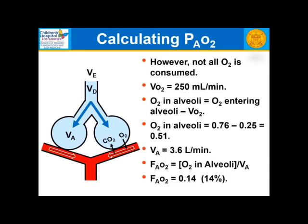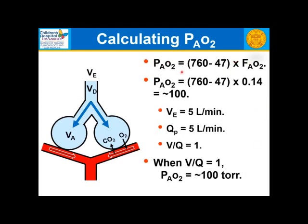Oxygen consumption is 250 mL/min. So oxygen in the alveolus = amount entering minus amount consumed = 0.76 − 0.25 = 0.51 L. Alveolar ventilation is 3.6 L/min, so the fraction of alveolar oxygen = 0.51 / 3.6 = 14%. Converting to alveolar PO2: (760 − 47) × 0.14 ≈ 100. So at VQ = 1, alveolar O2 is approximately 100 torr.